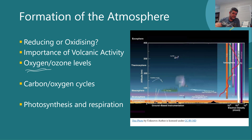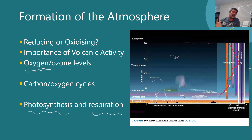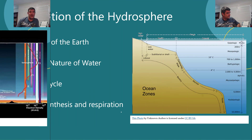The two processes of photosynthesis and respiration are particularly important in cycling materials through the atmosphere, but also in regulating levels of carbon dioxide and oxygen.